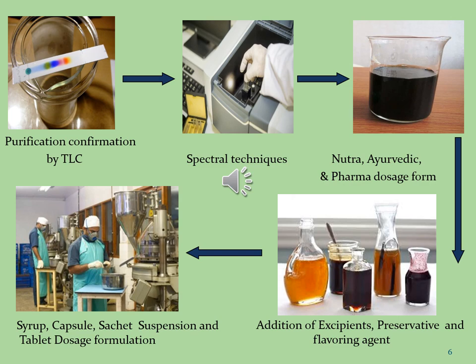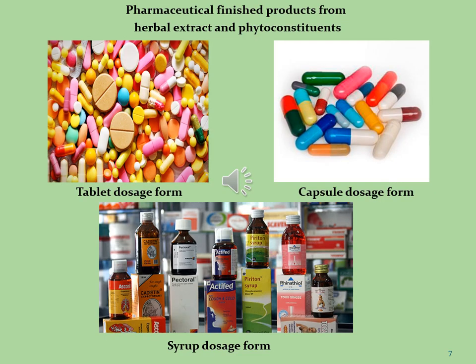In the final step, pure active phytoconstituents as well as more active crude herbal extracts are both subjected to formulation and evaluation of pharmaceutical dosage forms. These pharmaceutical dosage forms may be syrups, capsules, sachets, suspensions, and tablets, which are commercialized on the basis of active ingredients. The pharmaceutically finished products from herbal extracts and phytoconstituents include tablet dosage forms, capsule dosage forms, and syrup dosage forms — all of which have more appropriate and higher marketing values.